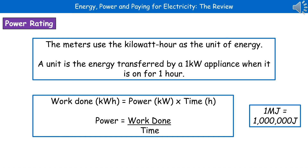The other thing you should make sure you remember is what the unit megajoule is. One megajoule is the same as one million joules. It's been included on one of the old specification papers, so just make yourself aware of what those other terms mean when they appear in the units.